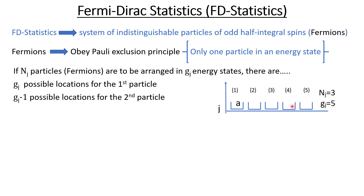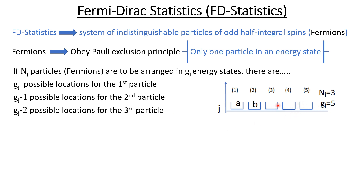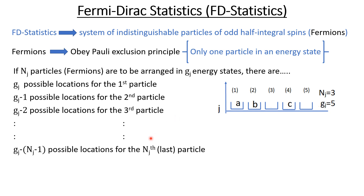Now for the second particle I have gj minus one possible locations. Here gj is five, so I have four locations, and I could put the second particle anywhere in these four energy states. For the third particle I now have gj minus two locations, so I can put the third particle anywhere in these three remaining locations. Similarly, as I go on putting particles in different locations, for the last particle — that is, for the nj-th particle — I will have gj minus (nj minus one) possible locations.